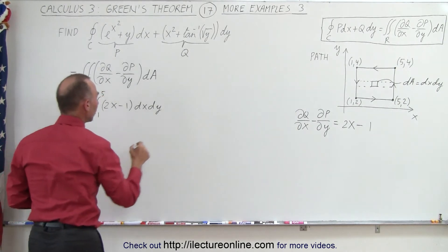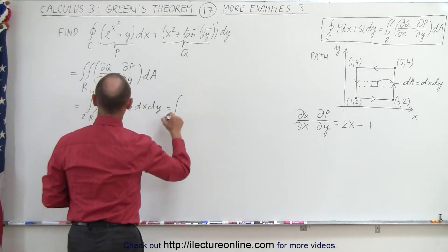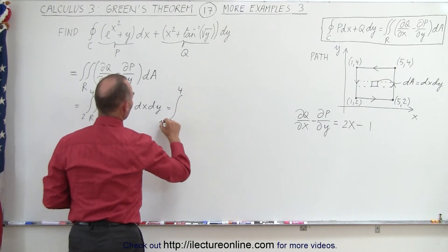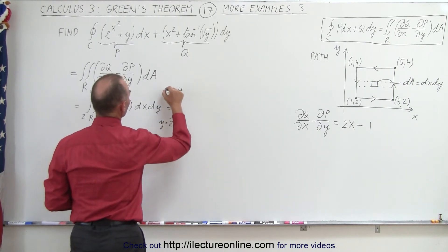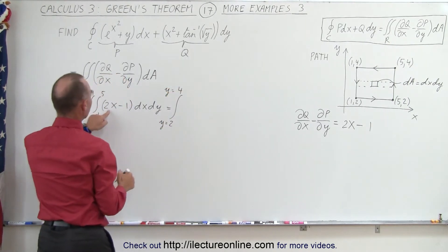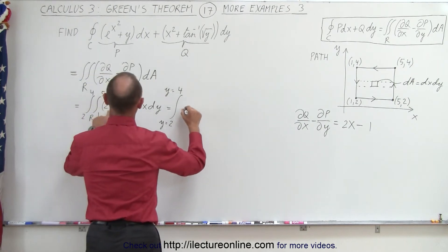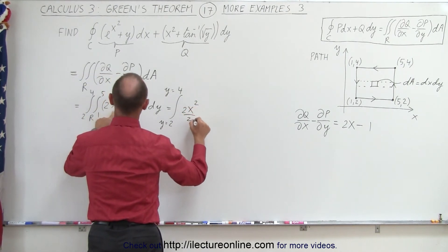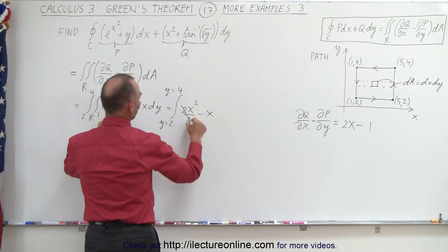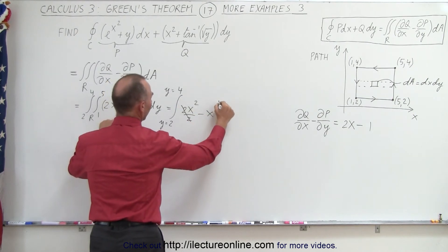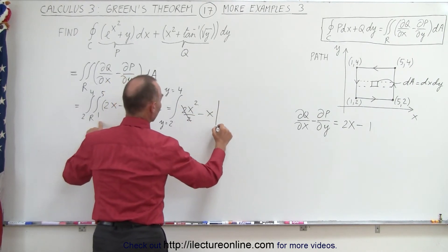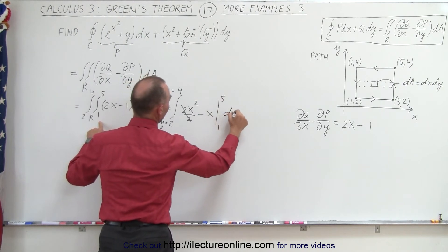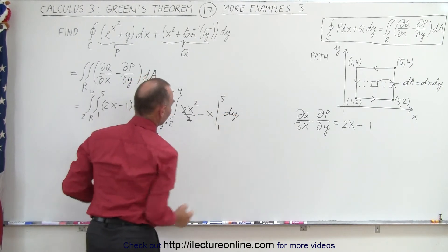For the first integral, from y equals 2 to 4, we integrate in the x direction and get 2x squared over 2 minus x — the twos cancel — evaluated from x equals 1 to x equals 5, and then we still have dy for our second integral.